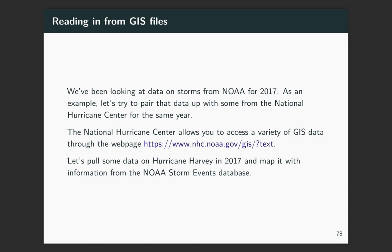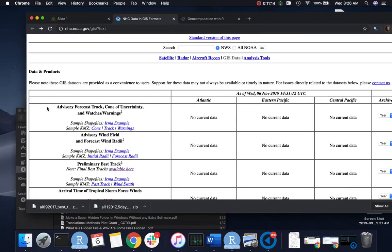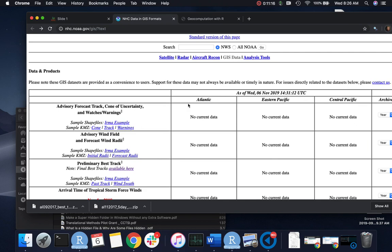Alright, so we've been looking at data on storms from NOAA for 2017. And so let's take a look now at how we might be able to pair that up with data we can get from the National Hurricane Center for that same year. That was a big year with storms. And one of the most notable ones was Hurricane Harvey in Texas. The National Hurricane Center gives you access to a lot of GIS data products. So if you go to this link, it will take you here.